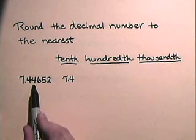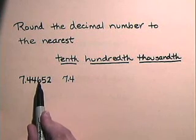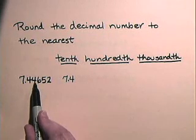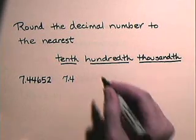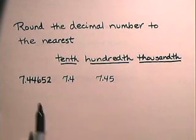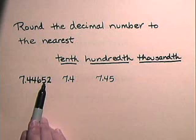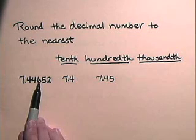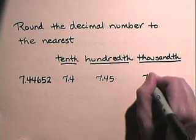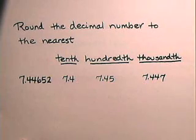To the nearest hundredths place, we look at the digit immediately to the right of the hundredths place and see that it is five or larger, so our hundredths place has to go up. This number rounded to the nearest hundredth is seven point four five, or seven and forty-five hundredths. To round to the thousandths, we look to the digit immediately to the right of the thousandths place. This digit is five or larger, so the thousandths place has to go up one unit, giving us seven point four four seven, or seven and four hundred forty-seven thousandths.